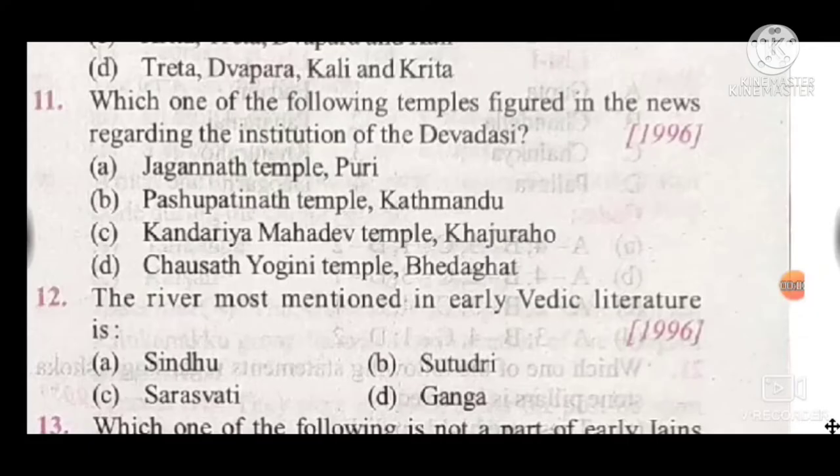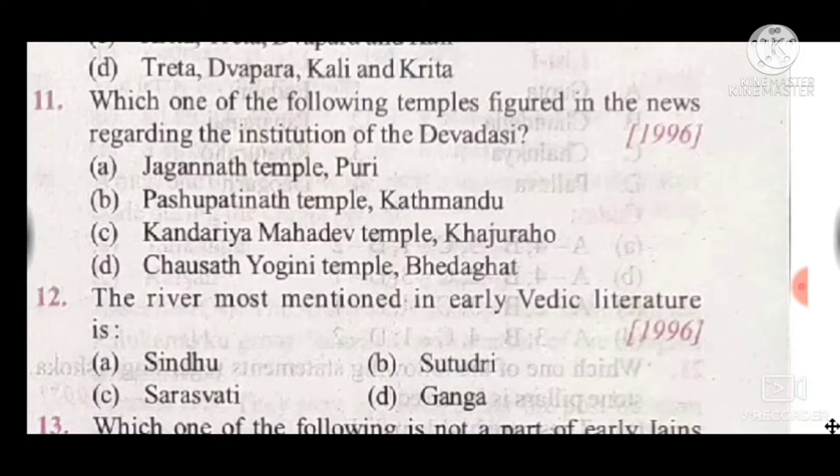Question 11: Which one of the following temples figured in the news regarding the institution of Devadasi? The answer is A, Jagannatha Temple, Puri. Question 12: The river most mentioned in early Vedic literature is — answer is A, Sindhu.